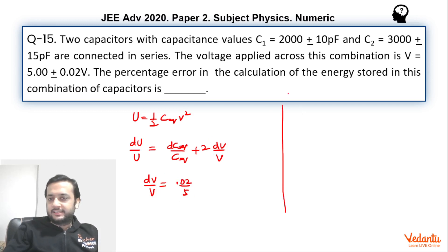Before that we need to find the C equivalent, like error over here. So C equivalent over here is C1 C2 divided by C1 plus C2, which makes it 2000 into 3000 divided by how much?